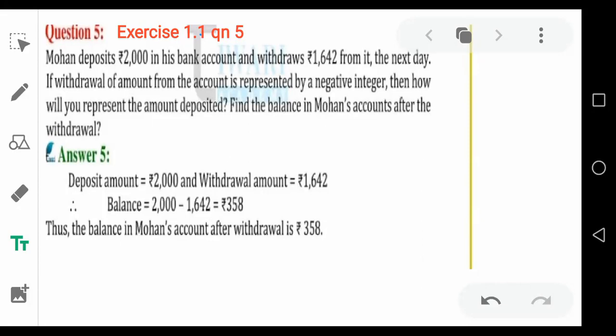Mohan deposits 2000 rupees in his bank account. You know, a bank account is where we can deposit our money. If we have 1000 rupees, we can go to the bank and deposit that money. So here, Mohan deposits 2000 rupees in his bank account.